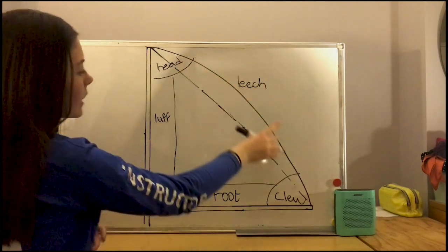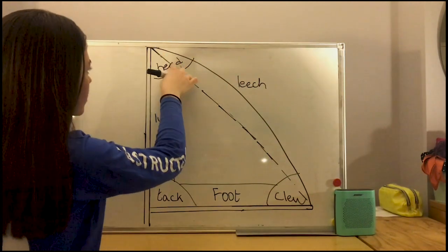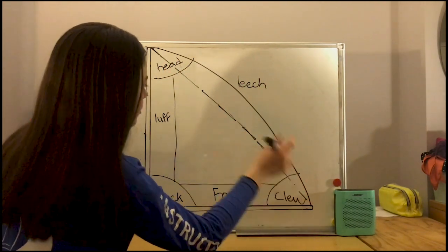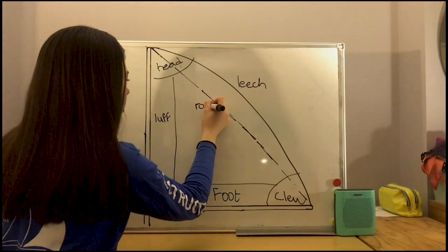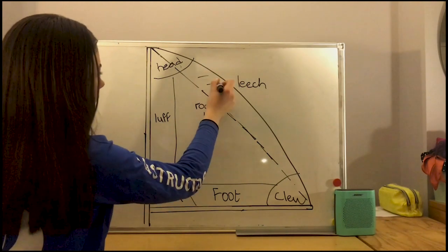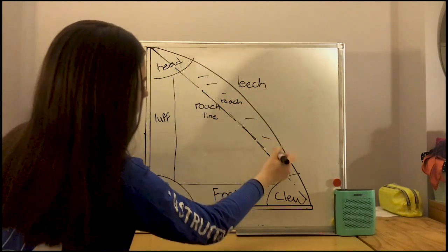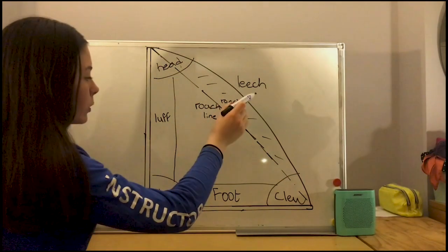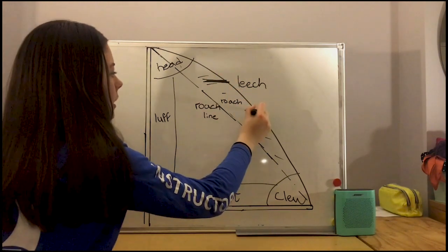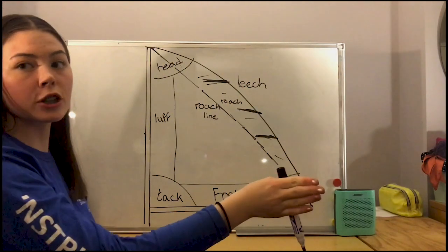Now you'll notice a sail isn't a perfect triangle. The leech curves out a little bit. So the actual straight line, that's not really there, but that a real triangle would follow, that's the roach line. So then this area in here, in between the roach line and the leech, is called the roach. And to hold this area out, there's normally battens like hard sticks in periodically along there to just hold it out so we can catch as much wind as possible.